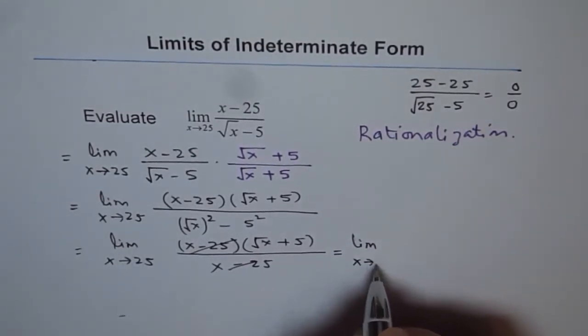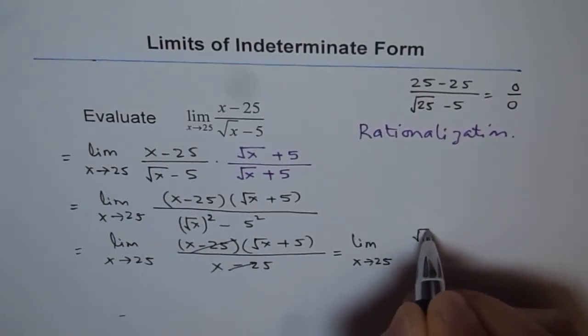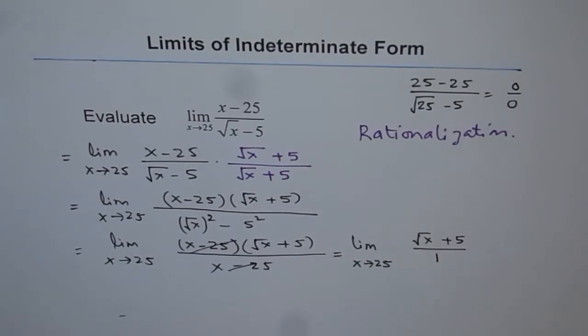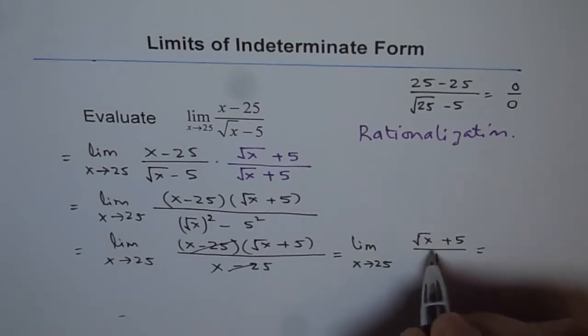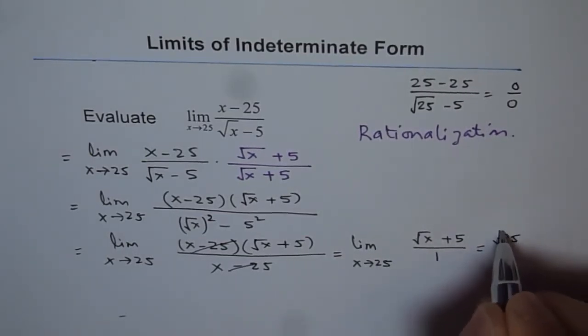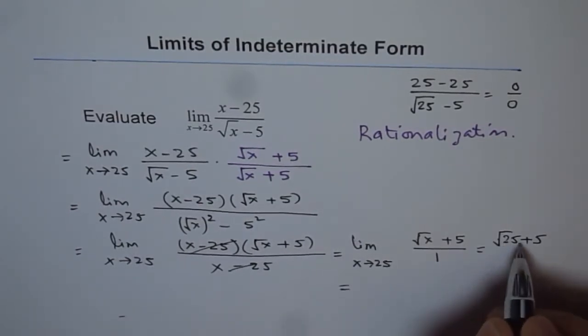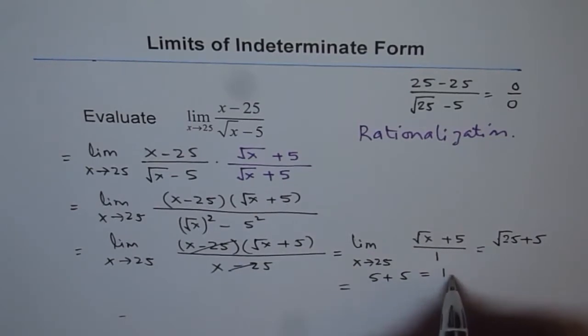We can simplify this and write this as limit x approaches 25, and the numerator is square root of x plus 5 over 1. Now, if we substitute 25, we get our answer. So we can have square root of 25 plus 5, and that gives us, square root of 25 is 5, 5 plus 5 gives us the answer 10.